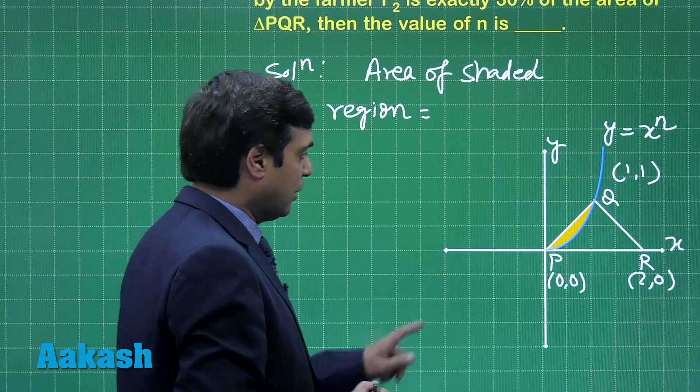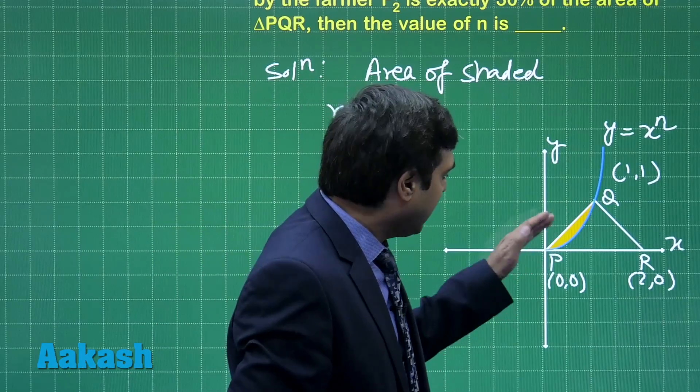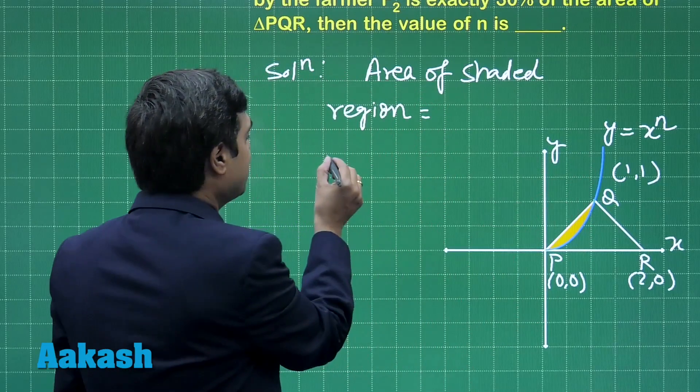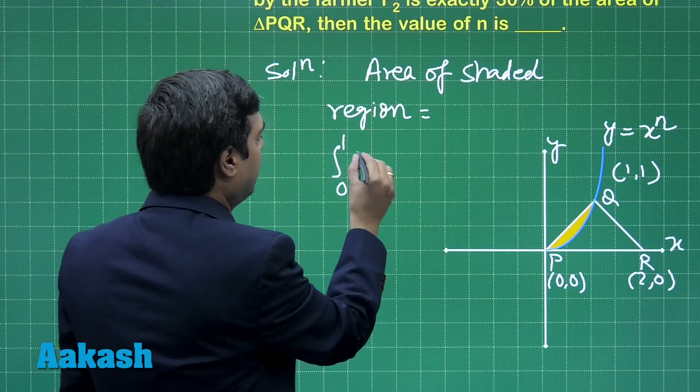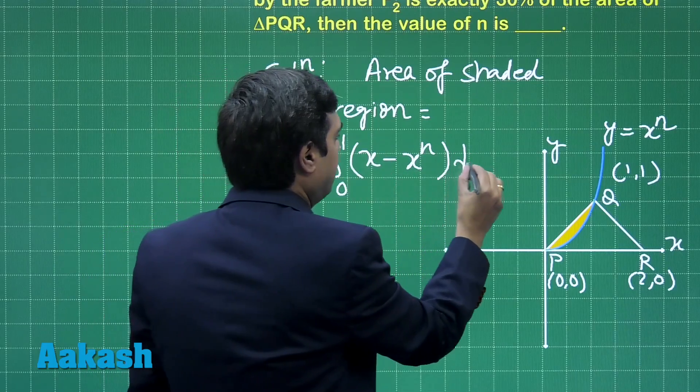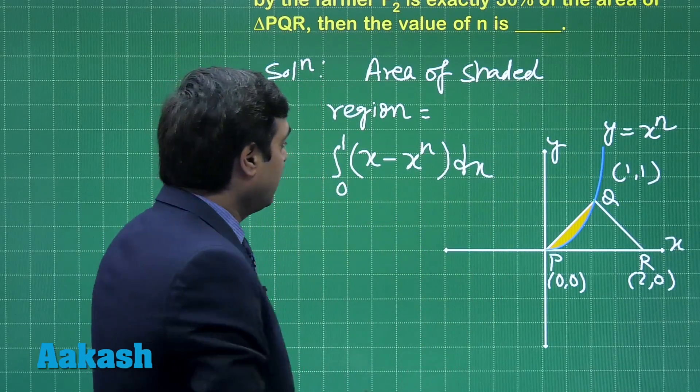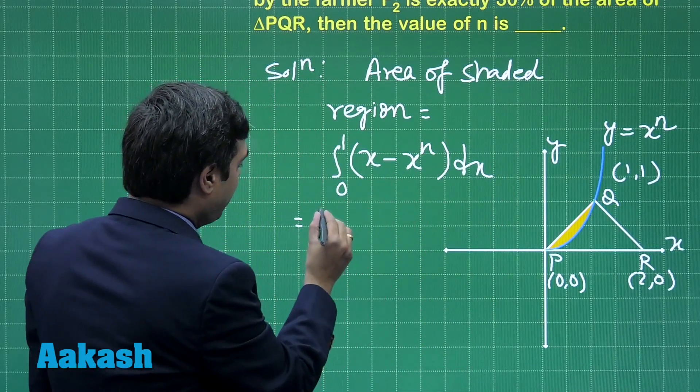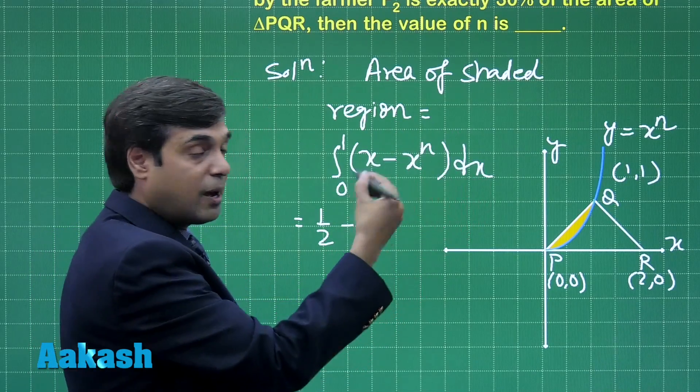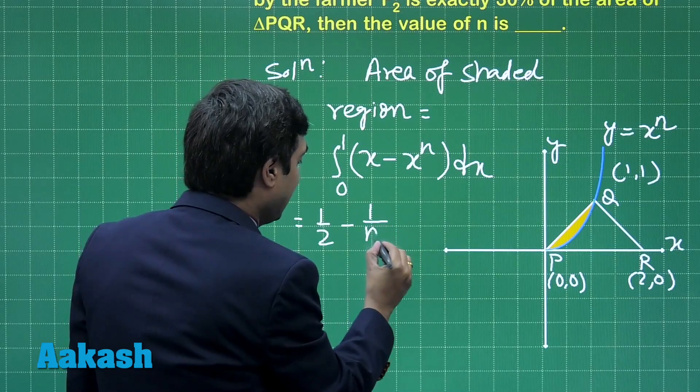is equal to the area under this line PQ minus area under the curve. So this gives us the integral: x²/2 (that is half) minus x^(n+1)/(n+1), that is 1/(n+1).